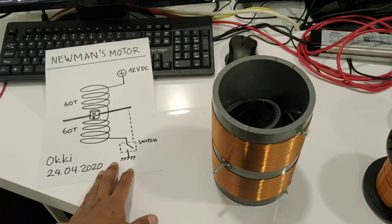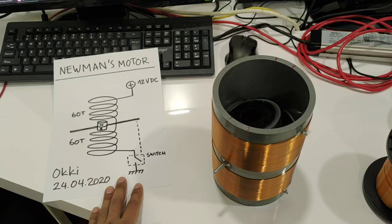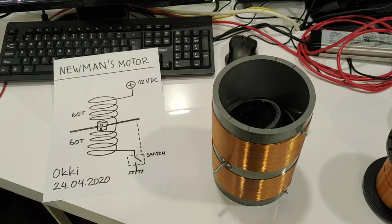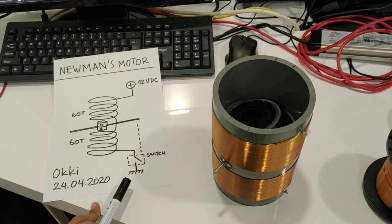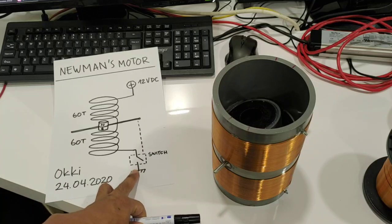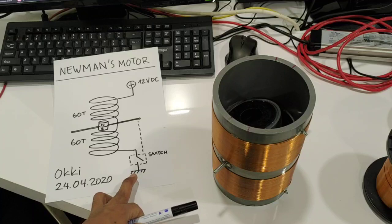Here you can see the schematic of this Newman motor. As I said before, this is very simple. It has no electronic components at all except for the switch.